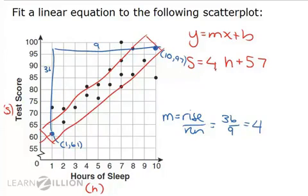Again, this is just an estimate. But modeling this scatter plot, I have a linear equation of s, which is the test score, equals 4 times the number of hours of sleep plus 57.